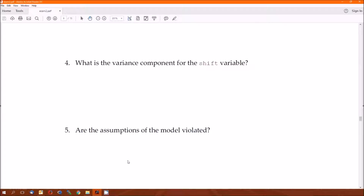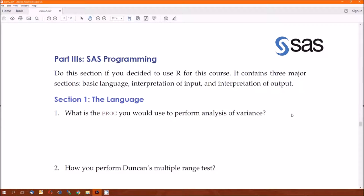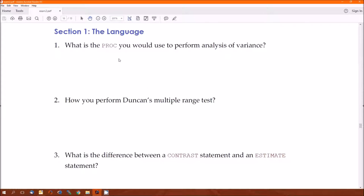Part three, the SAS programming. What's the PROC you would use? You can use PROC GLM. That's the one we tended to use. You could also use PROC Mixed, M-I-X-E-D. That offers a little bit more functionality, but it doesn't give you the same output as PROC GLM. GLIMMIX gives you even more options than PROC Mixed. But again, it doesn't give you the same output. I think everybody got number one right.